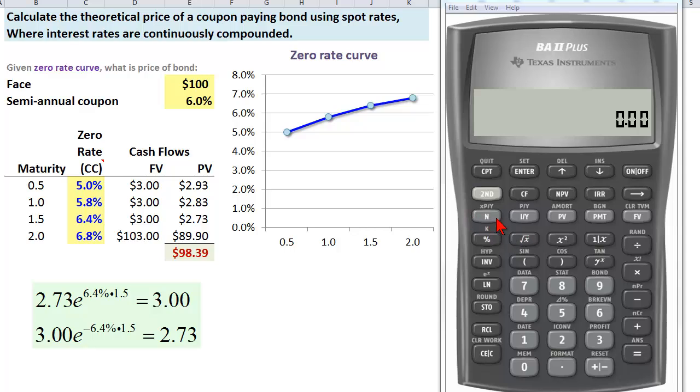Now in a previous video we used the time value of money keys to compute the theoretical price of a bond - we just computed or solved for the present value. The present value is the theoretical price of the bond.